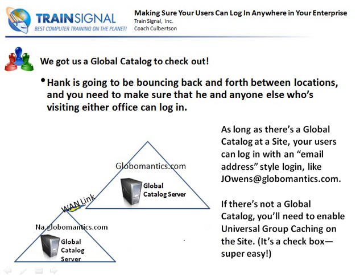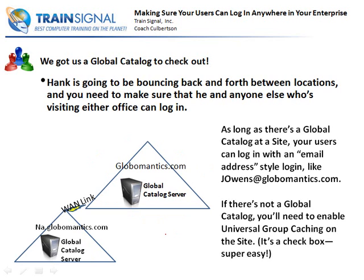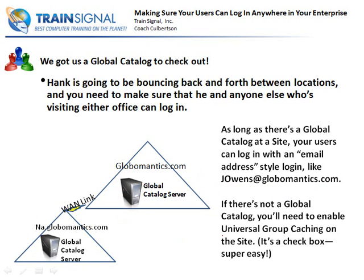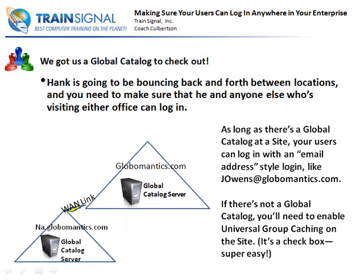If you have a site that does not have a global catalog — say Chicago was still part of globalmatics.com without a separate NA domain and without a GC — then you would use the universal group caching option. But if there's already a global catalog server, you don't need to do that. If you have a global catalog server on your different sites, even in different domains, users can log in with an email address style logon. If there's no global catalog, enable universal group caching on the site. I'll show you where to find that setting just in case.